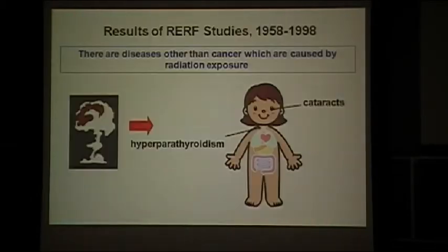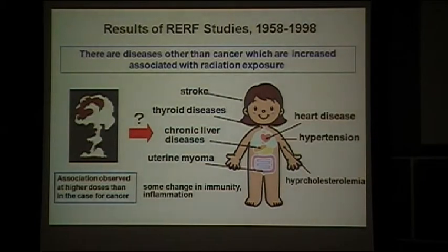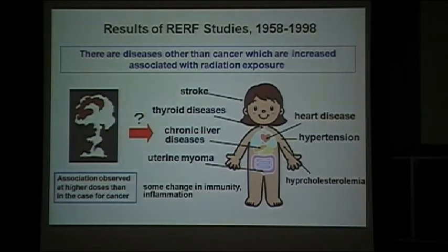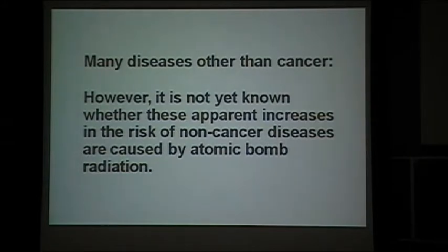For diseases other than cancer, we know there are diseases caused by radiation, which include cataracts and parathyroid disease — we call it hyperparathyroidism — a benign tumor causing hyperfunction of that gland. We also know there are several diseases where we see increased incidence or mortality associated with radiation exposure. Those include stroke, heart disease, high blood pressure, high cholesterol, thyroid benign tumors, liver disease, and uterine fibromas. This association tends to be observed at higher doses than in cases of cancer. Recently we see some changes in immunity and inflammation as well.